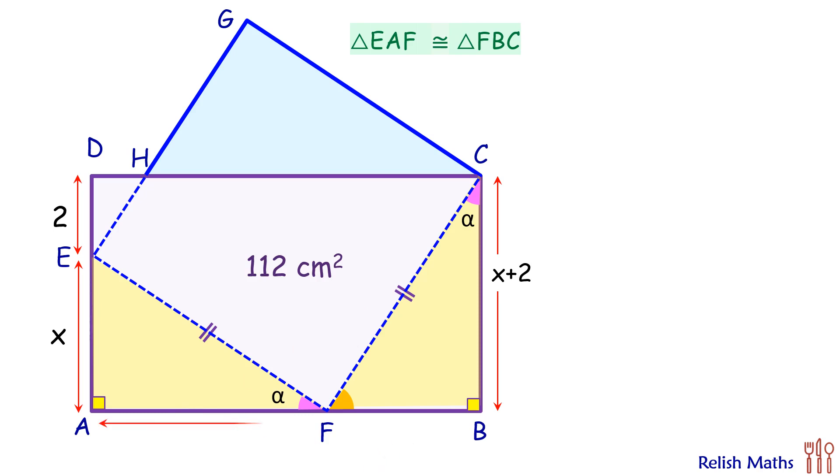Here we can say that the length AF will be equal to BC, and BC is nothing but x plus 2, so AF is x plus 2. How about FB? The length FB will be same as length EA, and EA is x units, so FB is x units.